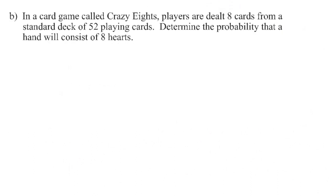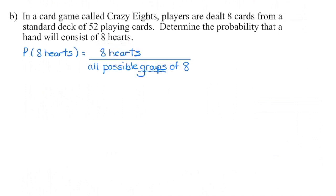In our second question, we are dealing with cards. Cards questions are often combinations. In this card game called Crazy 8s, players are dealt 8 cards from a standard deck of 52 playing cards. Determine the probability that a hand will consist of 8 hearts. The order doesn't matter here, so we are looking at what is the probability that all 8 dealt cards are hearts — this is a combination question.